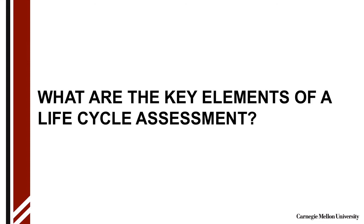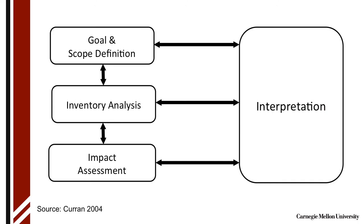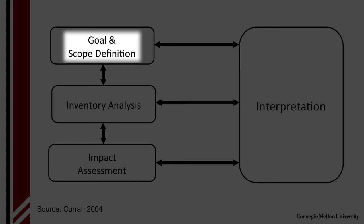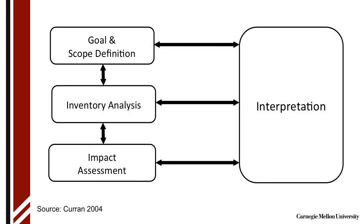And what are the key elements of a life cycle assessment? There are several stages. There's the goal and scope definition — that's where the analyst or the practitioner defines what you're going to study, what are the boundaries of your study, and what is the functional unit of the study. So when we're looking at natural gas, for example, we will be looking at emissions over a functional unit of a megajoule of natural gas or a kilowatt hour of electricity. So identifying the scope and the boundary are very important.